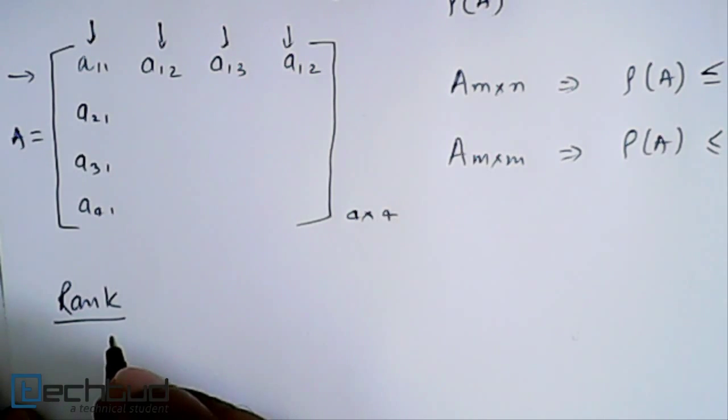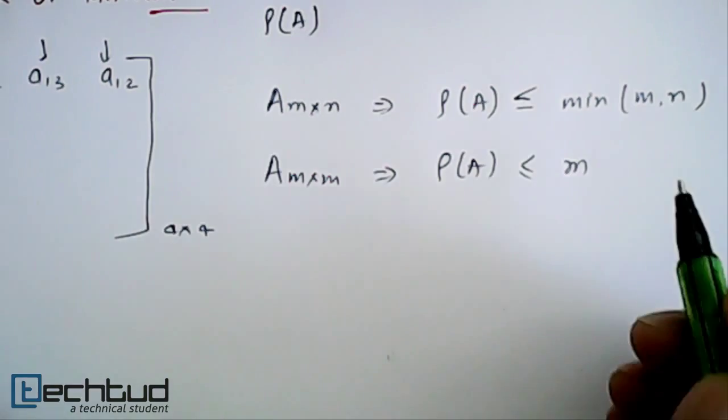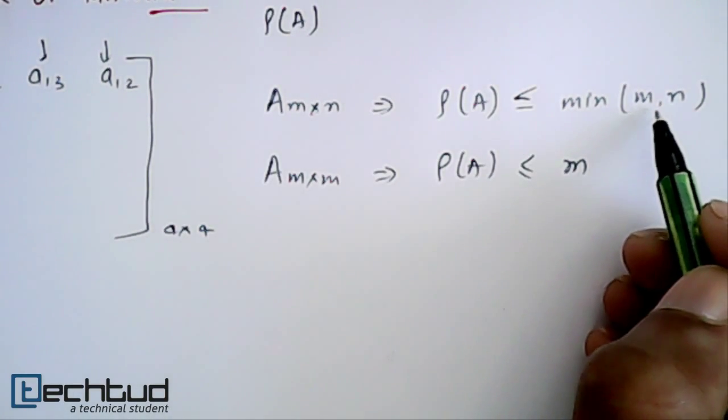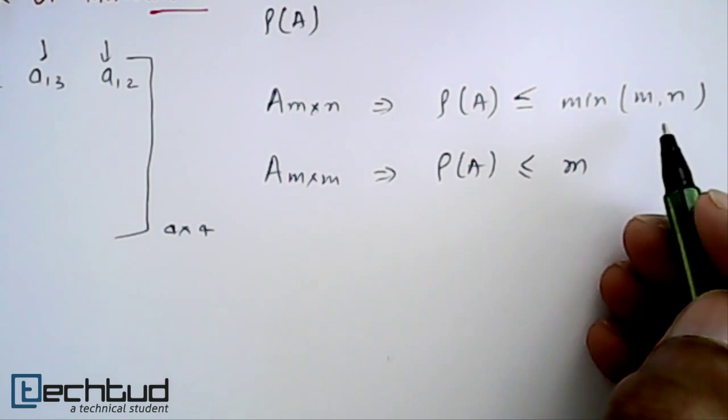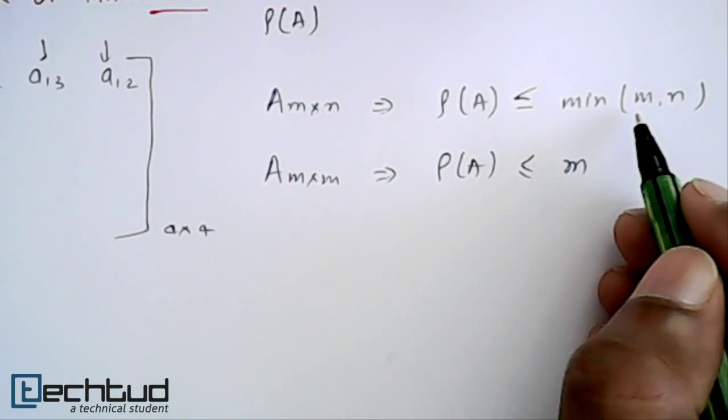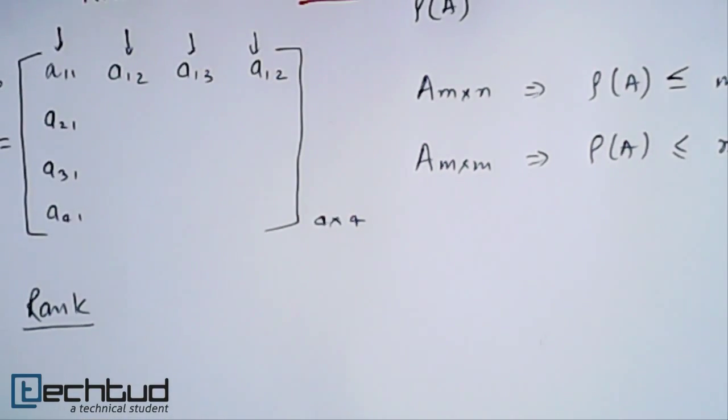We will start with maximum possible minor, size of minor. If we have an n by m matrix, then we will see which one is the minimum from m and n, and then we will take the minimum one and try to form the minor of that size.